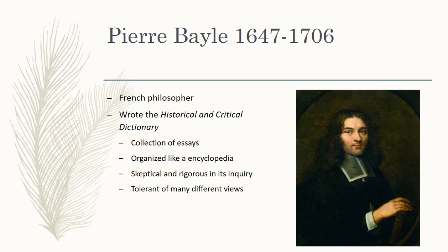It's called the Historical and Critical Dictionary, but it's not really a dictionary in the sense we use today. Instead, it was a collection of essays organized by topic title in alphabetical order — basically an encyclopedia before that term was common. Each article explored its topic skeptically and rigorously. It was also very tolerant of many different views, which is not surprising given that the writer was both a Huguenot and a Catholic at different times in his life.